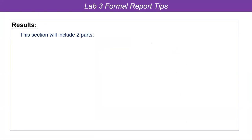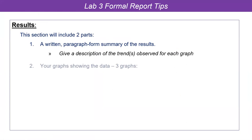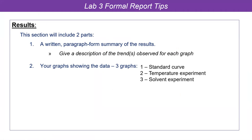Let's talk a little bit about the results section. This was asked for in your pre-lab assignment. It's going to include two parts: your data and your graphs. We've talked a little bit about graphs already in that video I gave you. You're going to have three graphs — basically your standard curve (figure one), your temperature experiment (figure two), and your solvent experiment (figure three). The other part of the results is a written component. You can think of your whole report as a kind of complex essay.